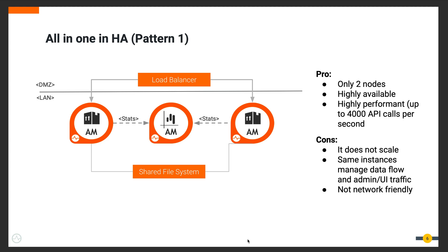Let's look at the most commonly used deployment patterns. We won't discuss the simplest — the all-in-one single instance model — as it is not recommended for mission-critical production deployments; it's fine for local testing or development. For mission-critical scenarios, we start with the all-in-one high availability model, commonly known as Pattern 1. With this, all components of the API Manager run in a single instance and single JVM, which is duplicated for high availability purposes.